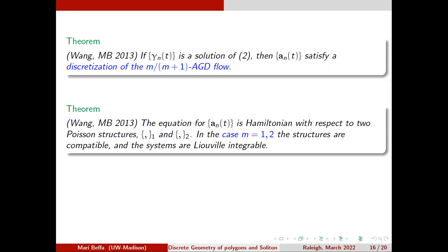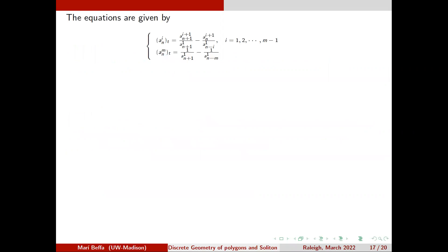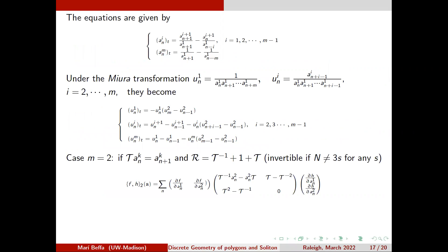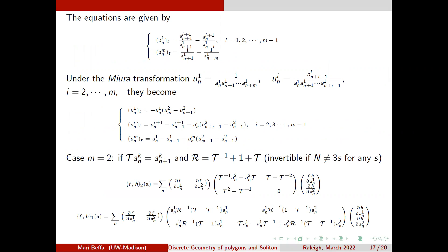We managed to find two Poisson structures making these flows bi-Hamiltonian, but we could not prove they were compatible. The structures on the invariants are operators involving shifts and their inverses using all vertices — very complex expressions. We were stuck for a long time. Then Anna Calini and I started asking: can we shift to the polygon level and find structures on the polygons rather than on the invariants?